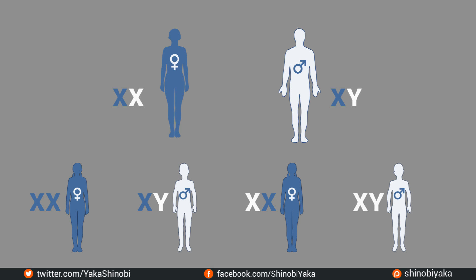Males get one X chromosome from their mother and always inherit a Y chromosome from their father, never an X. In contrast, females have two X chromosomes in each cell — one from the mother and one from the father. This presents a problem: two active X chromosomes in a single cell results in conflicting genetic instruction, so this has to be prohibited by women's biology. Only one X chromosome can be active in each cell — the second X chromosome must be deactivated.